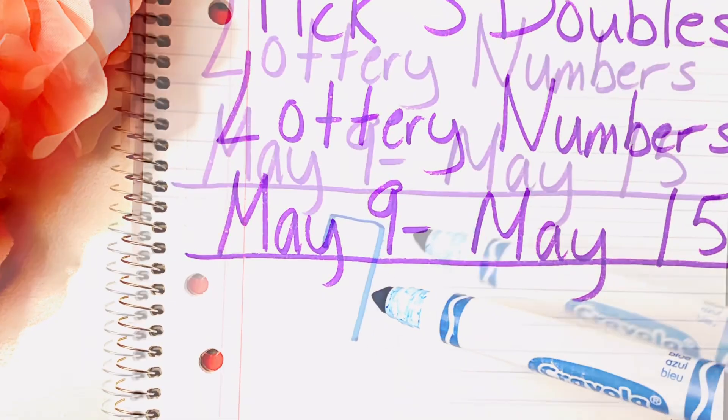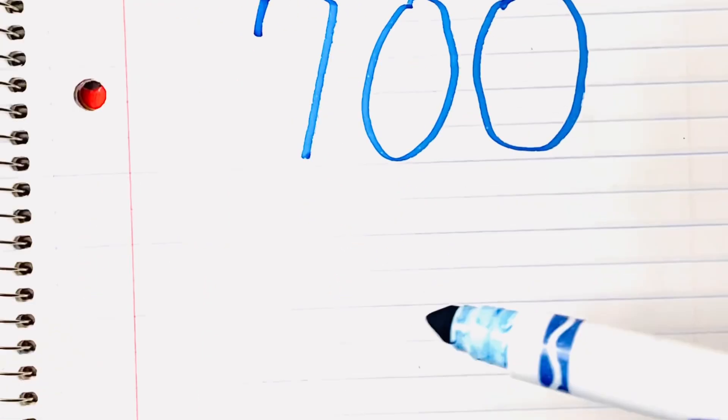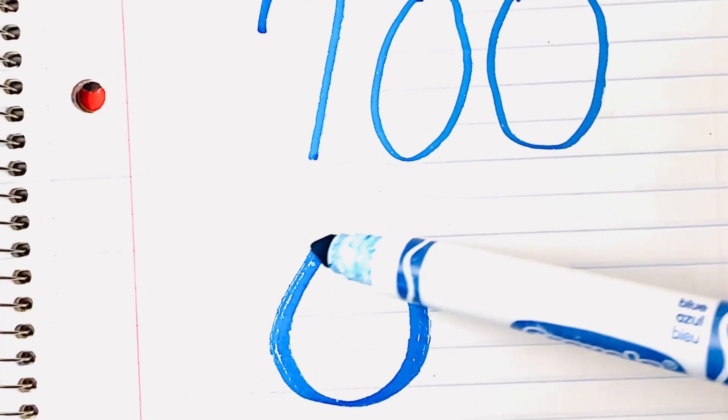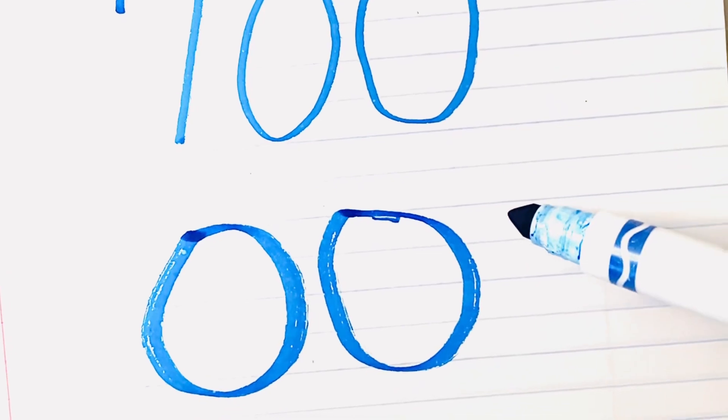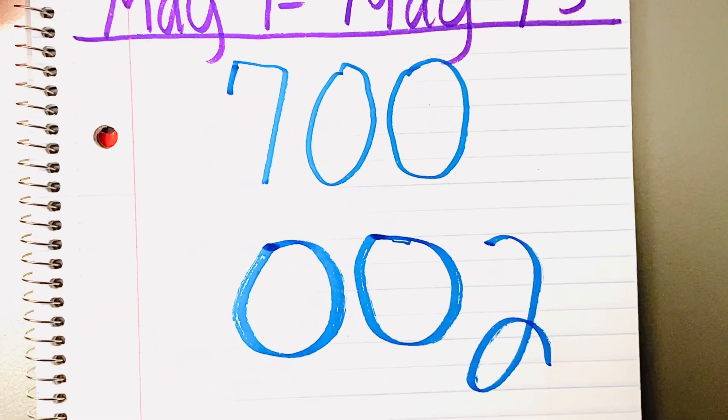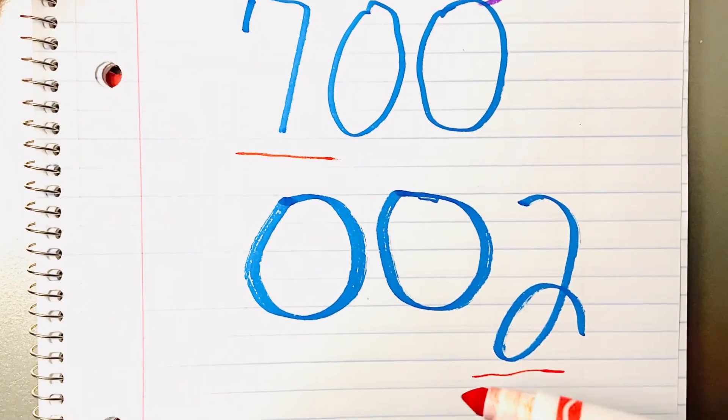First number on the list, I'm going to write it out this time, is 700. And the next number on our list here for the week is 002. Now I'm going to write this 2 a little bit bigger because I want to emphasize the 2, because I'm going to compare these 2 numbers if you're trying to decide should you play both of them or just one of them.